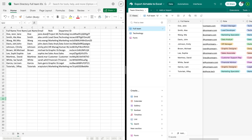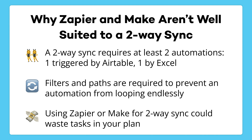Setting up a one-way sync like this only takes a few minutes in apps like Zapier or Make, and plans begin at around $20 a month for Zapier and $10 a month for Make. You could also potentially create a two-way sync by creating an additional automation that swaps the apps. However, you would also need to add additional filters or conditional paths to check the last modified time in each app in order to avoid a loop of infinite updates. Your automation provider might stop your automation from running eventually if you made a mistake like that, but you could easily consume hundreds or even thousands of tasks before it's turned off. So be careful, and I wouldn't recommend that approach.